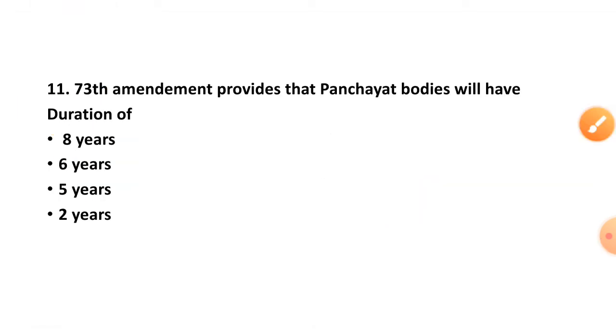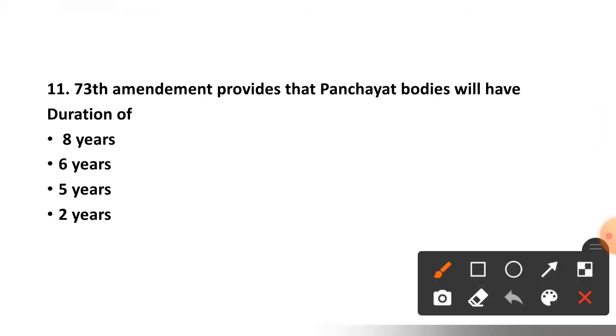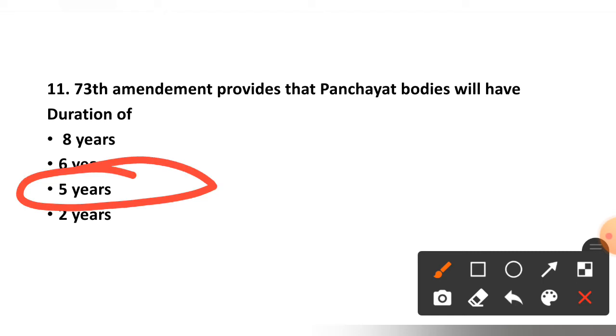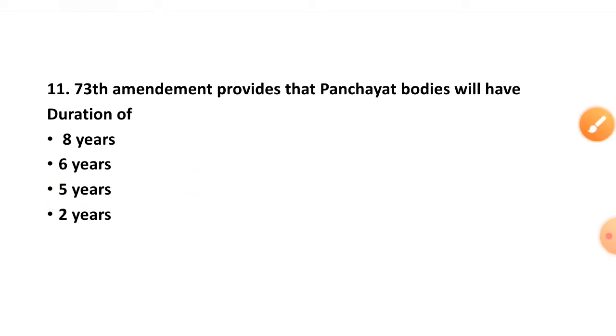Question number eleven: The 73rd Amendment allows that the Panchayat body will have a duration of — 8 years, 6 years, 5 years, or 2 years? The correct option is option C — 5 years.